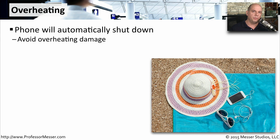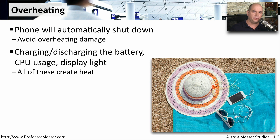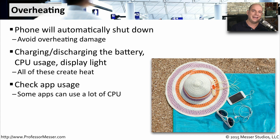Our phones and mobile devices are remarkable computing platforms, but they are sensitive to heat. Leaving your phone in the sun may cause it to overheat and automatically turn itself off to prevent damage to components. Heat can also be created by constantly charging and discharging the battery, heavy CPU usage from a particular application, or having the screen light on. If your phone seems to be getting warm without doing anything visible, an application is probably using a lot of CPU cycles, so check application usage to see what's consuming the most battery or CPU.